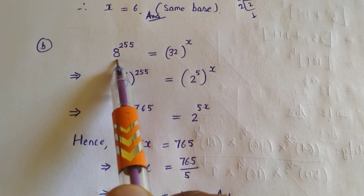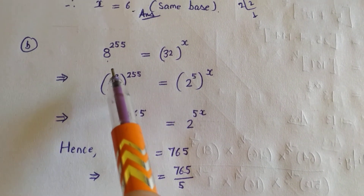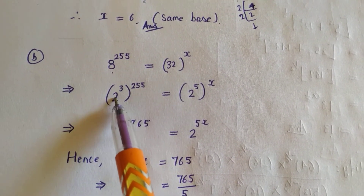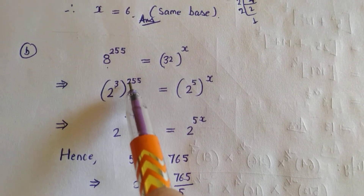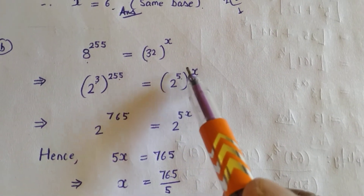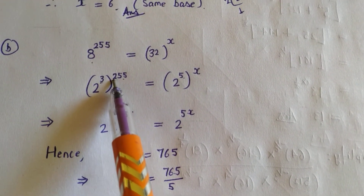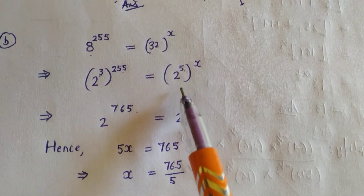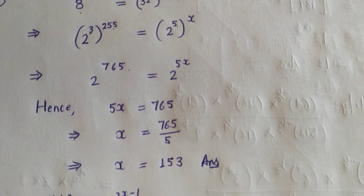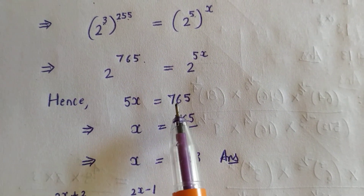Next question: 8 to the power 255 is equal to 32 to the power x. We convert both sides to base 2: 8 is 2 cubed, so 8^255 = (2^3)^255 = 2^765. And 32 is 2 to the power 5, so 32^x = (2^5)^x = 2^(5x). Now we have 2^765 = 2^(5x).